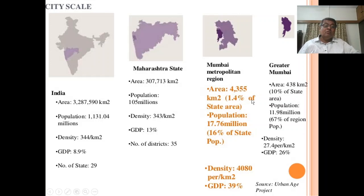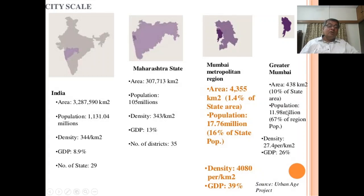The Mumbai Metropolitan Region is 1.4% of the total area. Greater Mumbai area is 438 square kilometers. Population of India has crossed 113 crores; population of Maharashtra is about 105 million; population of the Mumbai Metropolitan Region is 17.76 million; and population of Greater Mumbai is 11.90 million. GDP: India's is 8.9%; Maharashtra's is 13%; MMR's is 39%; and Greater Mumbai's is 26%.